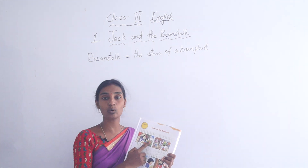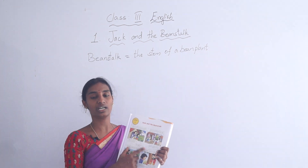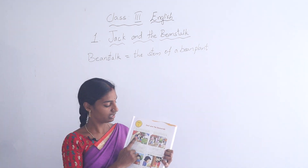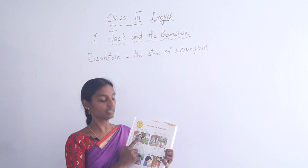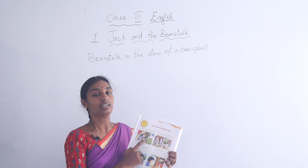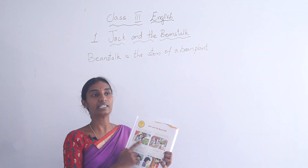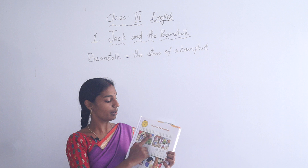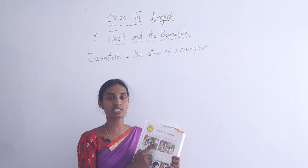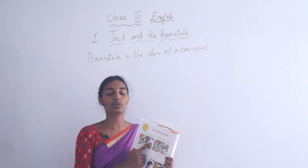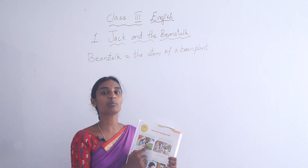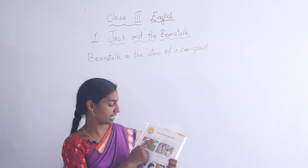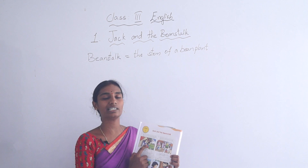And you may see another person also here, and they have a cow also. In this story we are going to learn how they are going to be. In the first picture we can see Jack, his mother, and cow. In this paragraph, Jack has a cow and it is the only source of their income. They used to earn money with the help of the cow — the cow gives milk. One day, this cow named Milky stopped giving milk.